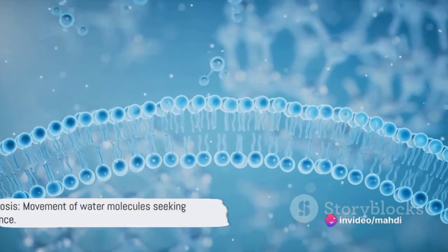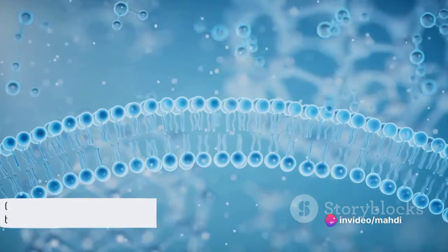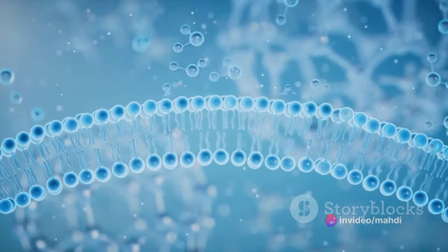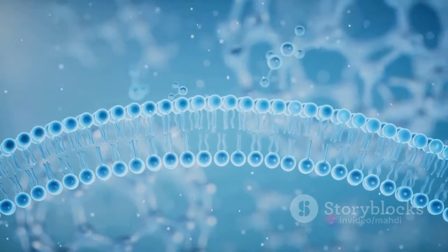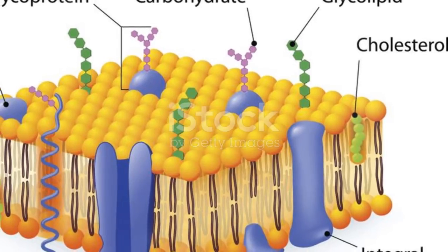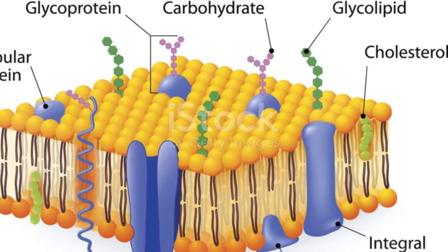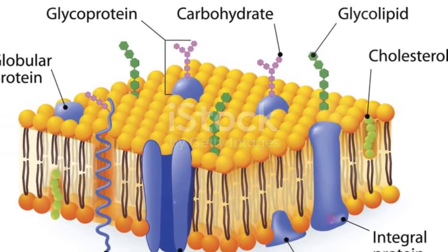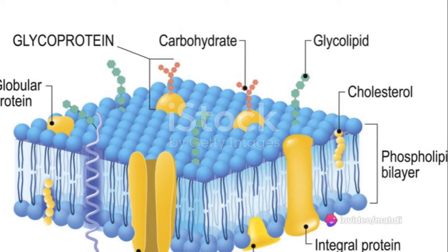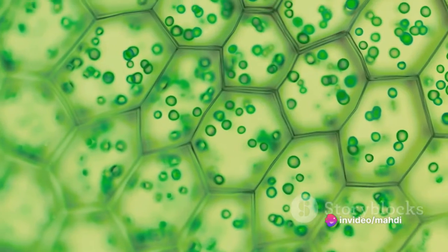So, to sum up: osmosis is the movement of water molecules from an area of high water potential to an area of low water potential, all in the quest for balance. This process, governed by semi-permeable membranes, is essential for life, allowing cells to maintain hydration.